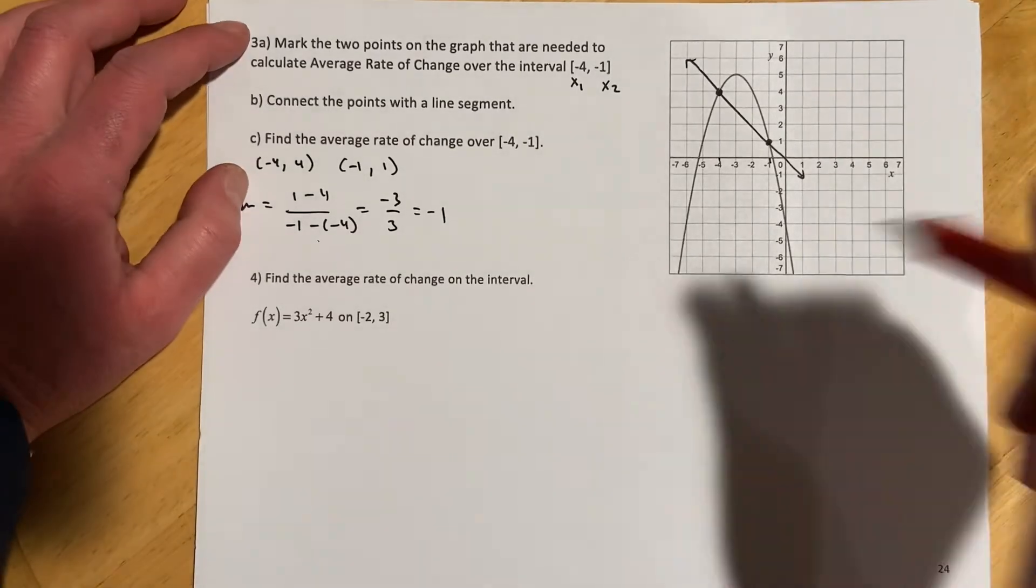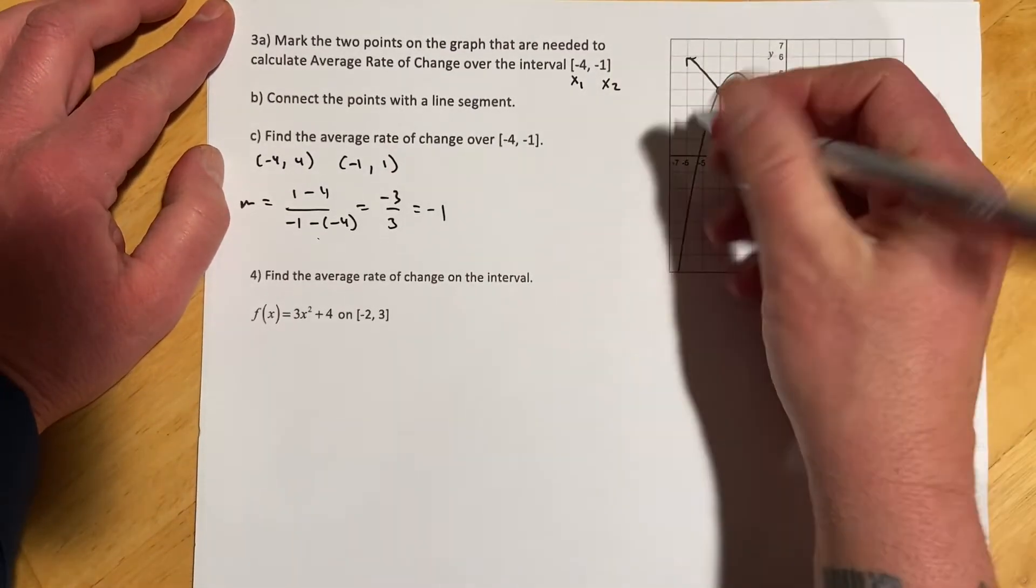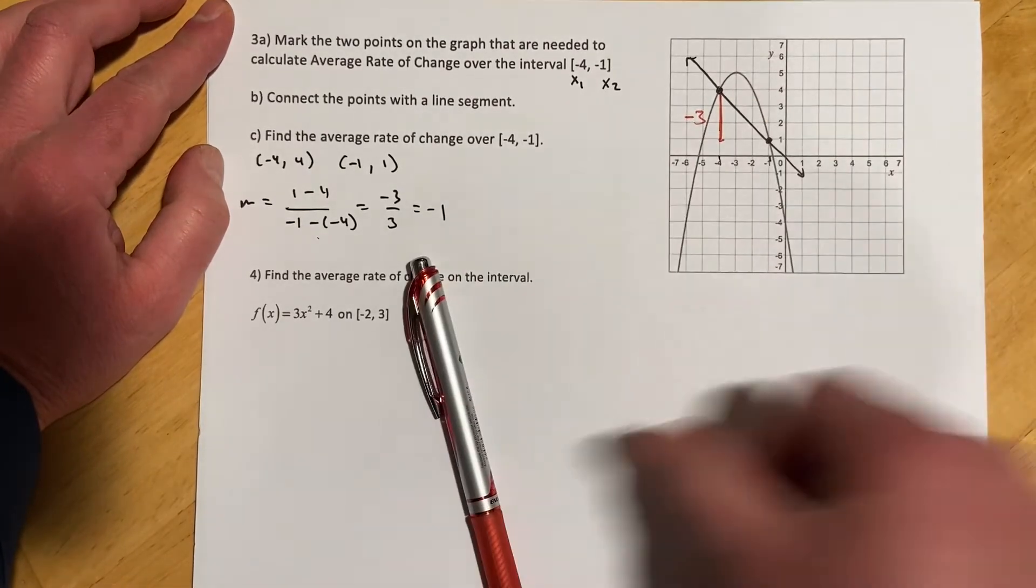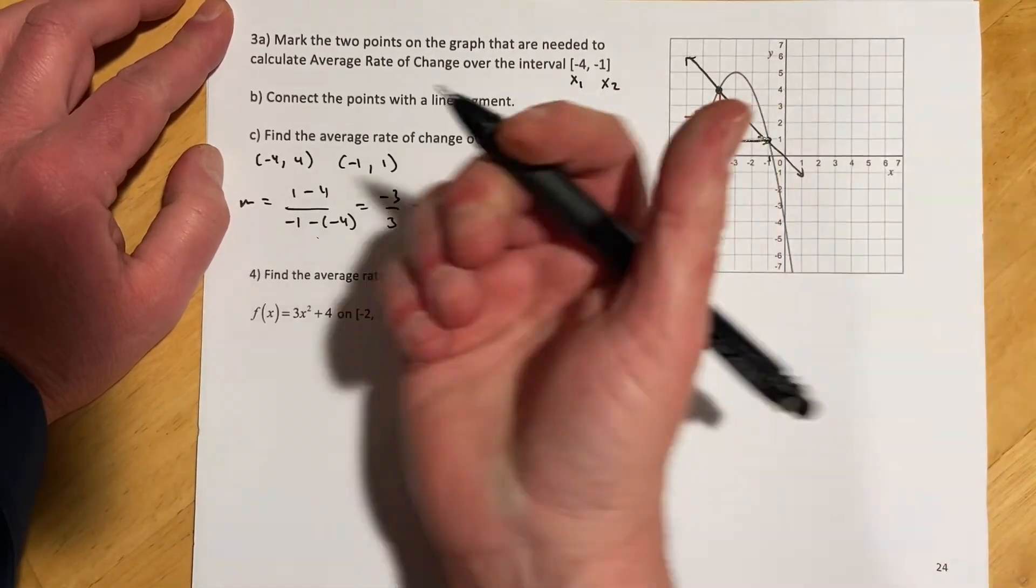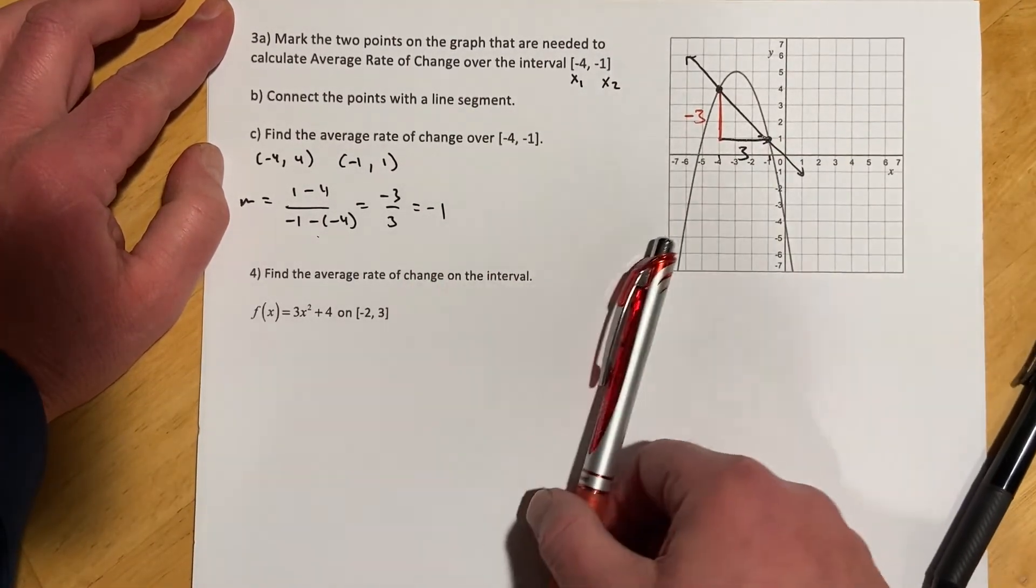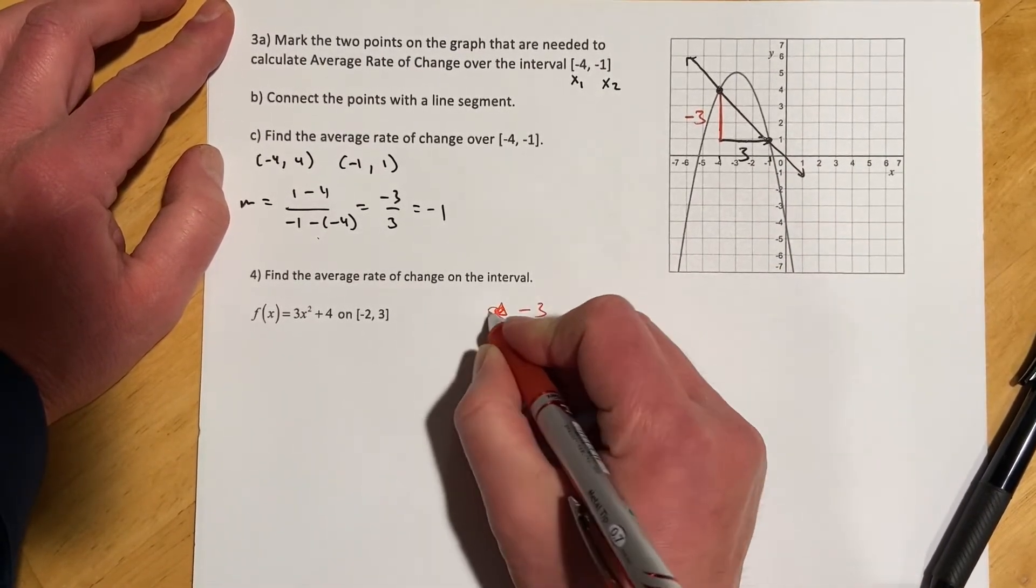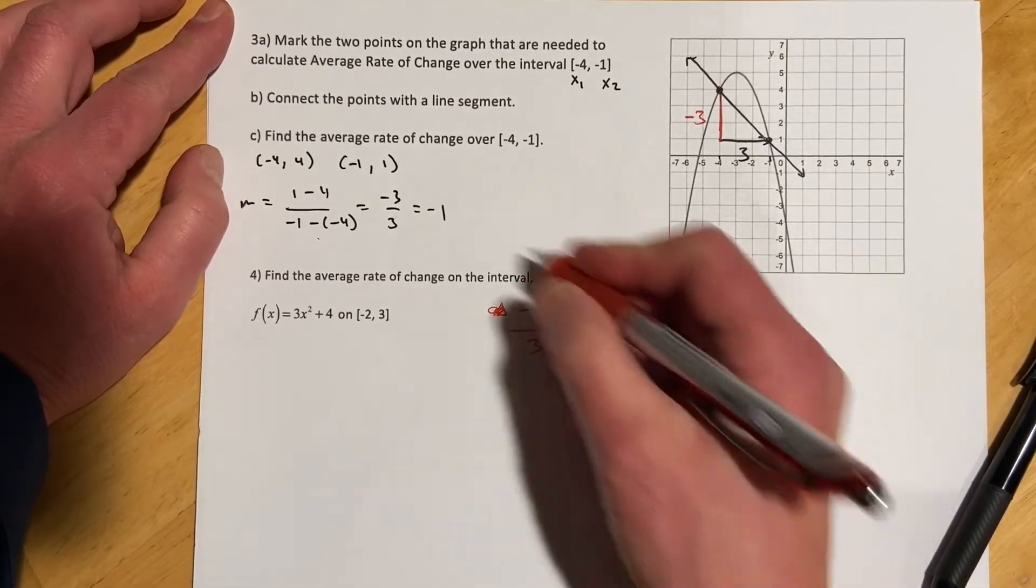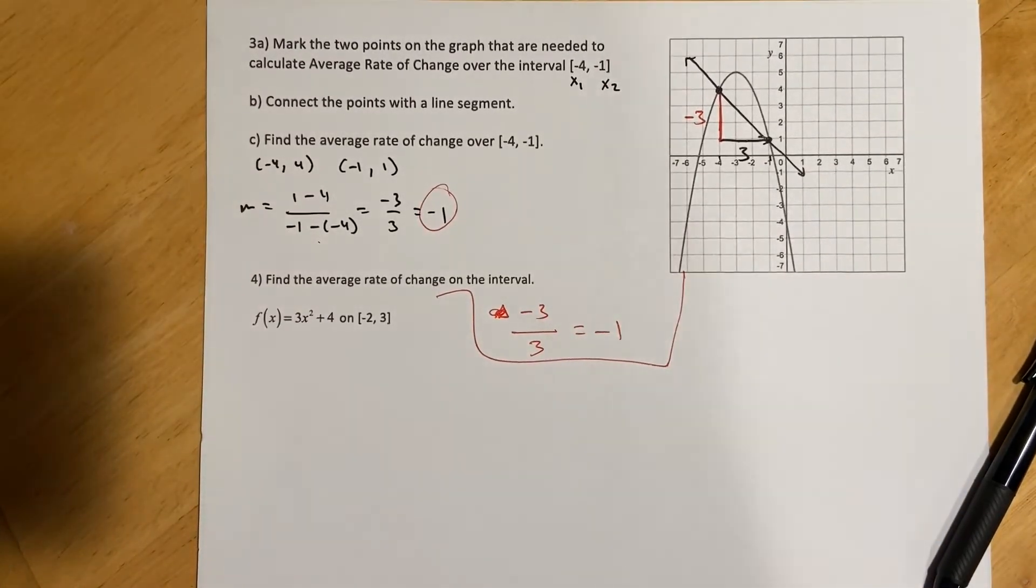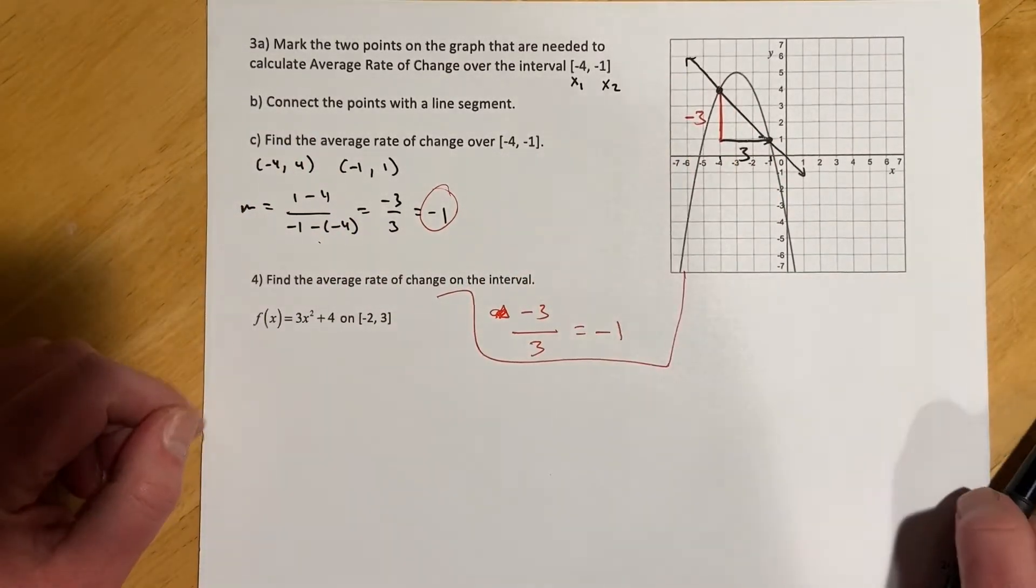That would be the hard way to do it, or I could just look over here at the picture and go okay, what's my change in y? My change in y, I'm going in the negative direction, so my change in y is negative three. And what's my change in x? For me, I always work to the right and that's positive direction, so that would be positive three. So if I think of change in y over change in x, I get negative three over three and that's the exact same negative one as I got up here.